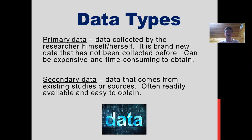There's both primary and secondary data. Primary data is something that you collect either by yourself or a group of team members — it's brand new and has not been done before. That has advantages and disadvantages. The fact that you can tailor the experiment and the data collection to exactly what you want is very beneficial, but on the flip side, it can be expensive to obtain that data and very time-consuming.